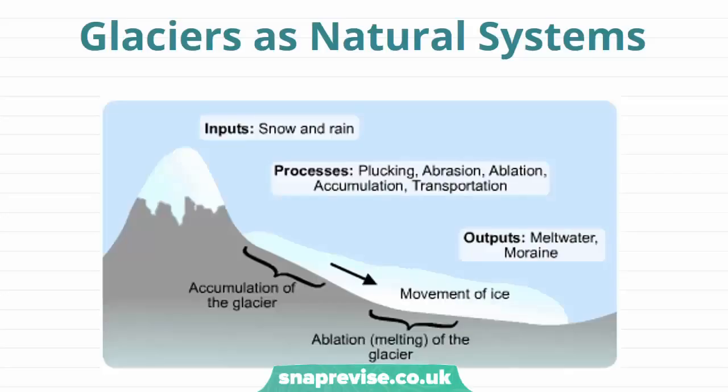As we learnt in the first video, a system is an assemblage of interrelated parts that work together by ways of some driving processes. In this video we are going to look at glacial systems to understand how, when and where glaciers and ice sheets form and their effects on the landscape.